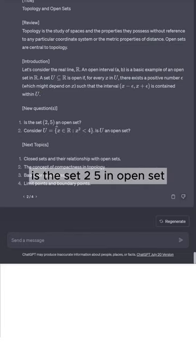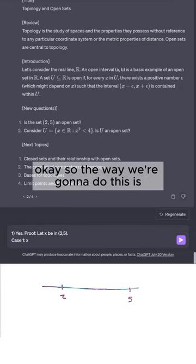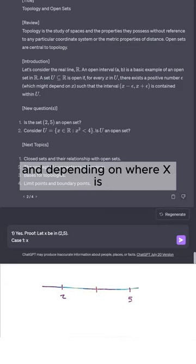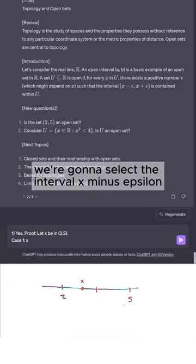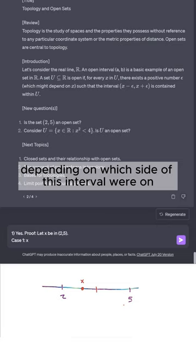New question: is the set (2,5) an open set? The answer is yes, but let's prove it. Let x be in this set. The way we're going to do this is we're going to split the interval in half, and depending on where x is, we're going to select the interval (x - epsilon, x + epsilon) depending on which side of this interval we're on.